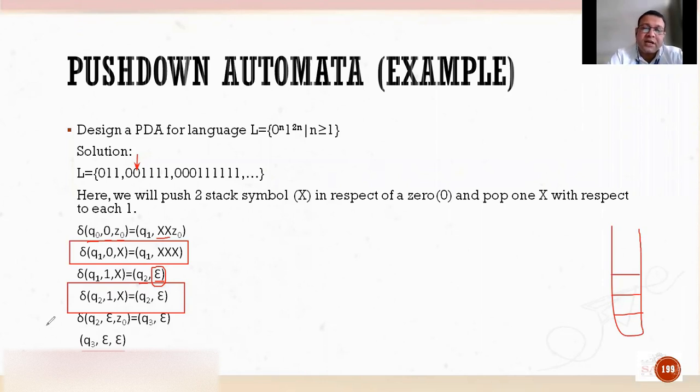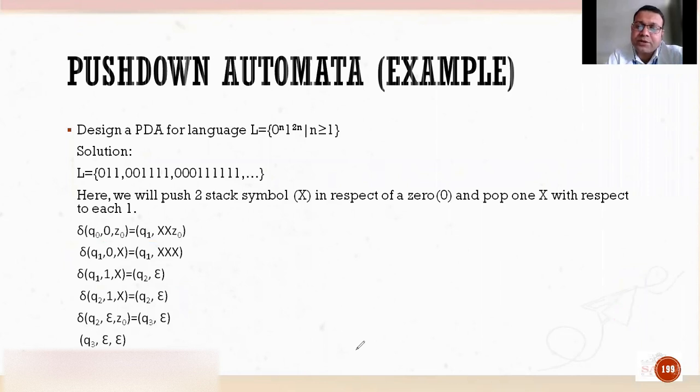So this is how you are going to make your PDA for 0 to the power n, 1 to the power 2n. I hope you understood the problem. If you have any doubt you can ask me in comments or you can text me. Thank you so much.